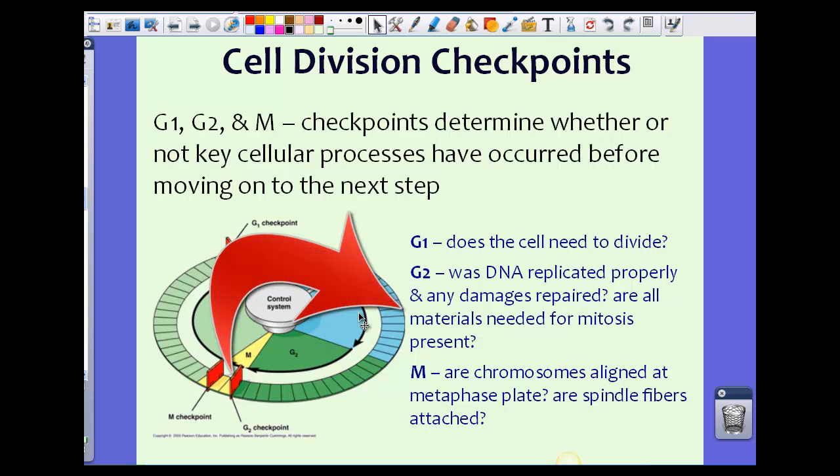In the G2 phase, right at the end of the G2 phase, was the DNA replicated properly? Were there any damages? Were the damages repaired? Are all materials needed for mitosis present? That happens at the end of the G2 phase.